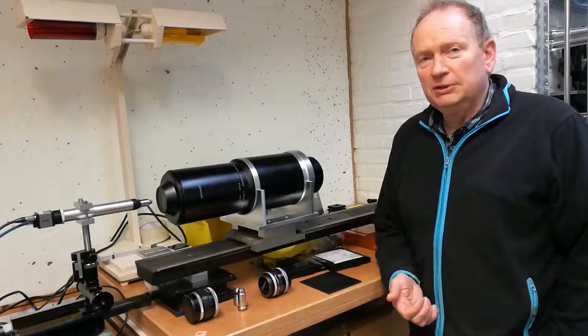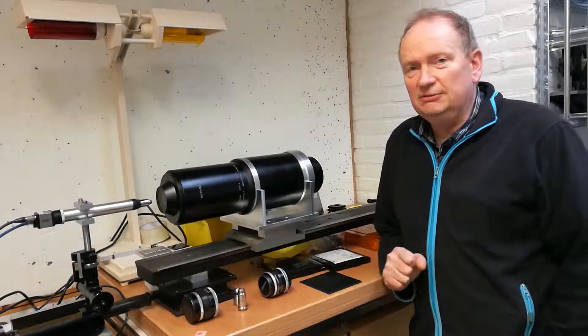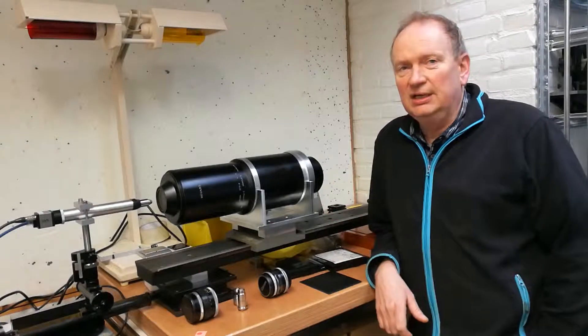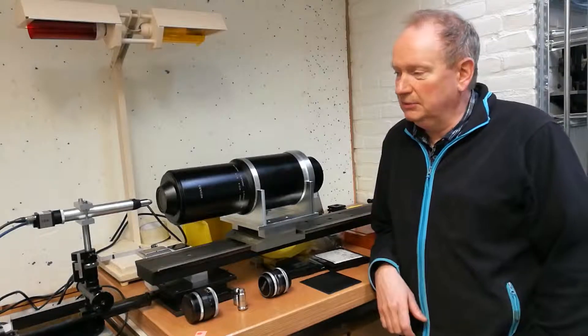So what we are going to do is we are going to have a look at the very tiny features on photo masks with this lens and see what kind of features we can still see when we do a projection.